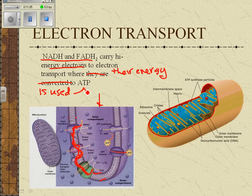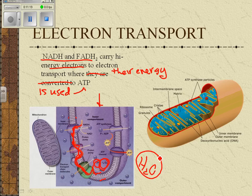Now, electrons are things — what happens to them? The oxygen you breathed in is used in the mitochondria to pick up those electrons with a couple of hydrogens and form water. So the electrons are passed along, passed along, and then picked up by oxygen and used to form water.